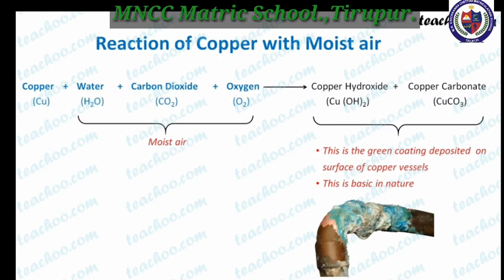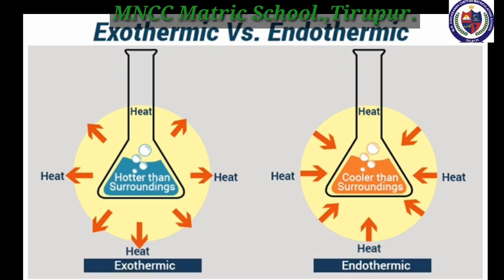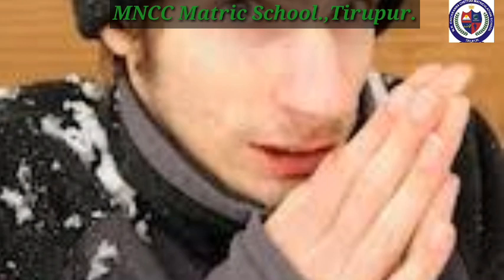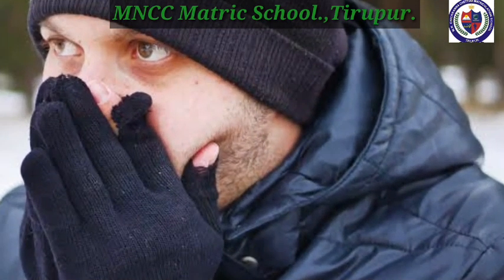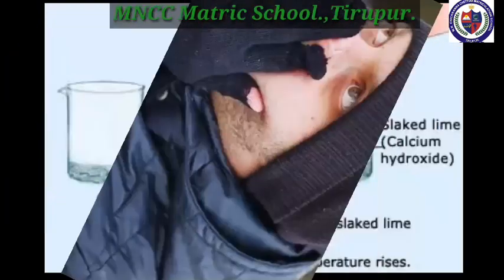Next we move to production of heat, light, sound, and pressure. Before we enter this topic, we need to know what exothermic and endothermic reactions are. Exothermic reactions release heat energy; endothermic reactions consume heat energy. Exothermic reactions are hotter than surroundings; endothermic reactions are cooler. Have you ever rubbed your palms in winter to keep warm, or noticed heat produced when using a cycle pump? Likewise, chemical reactions also produce heat energy — such reactions are called exothermic reactions.